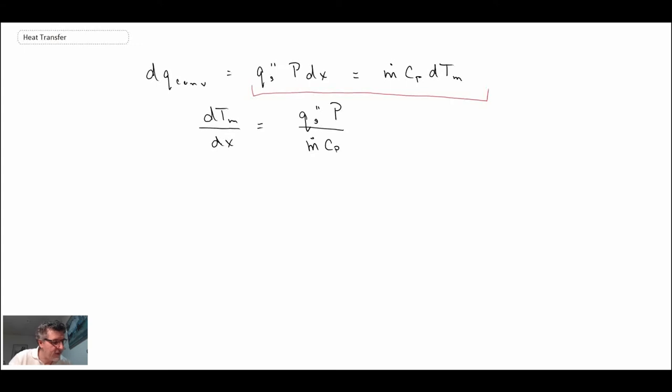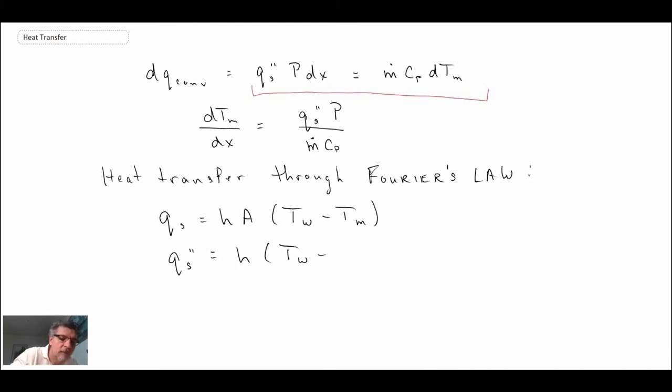What we're going to do is take this and look again at Fourier's law, or the way that we quantify convective heat transfer in the pipe. We have this expression here for Qs'', and that would be the heat transfer, the convective heat transfer, due to convection on the wall.